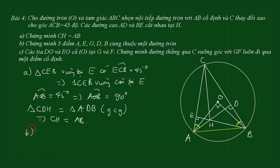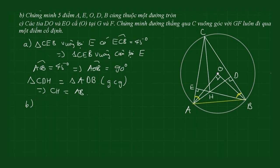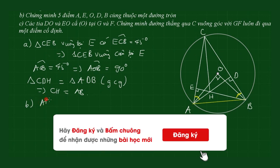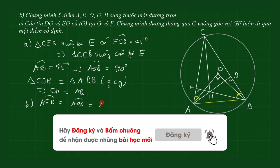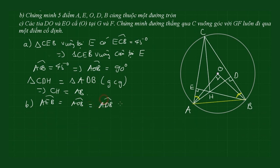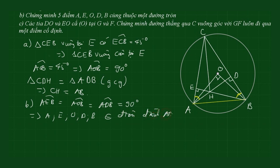Câu B: chứng minh A, E, O, D, B cùng thuộc một đường tròn. Góc AEB = góc AOB = góc ADB = 90°. Vậy A, E, O, D, B cùng thuộc đường tròn đường kính AB.